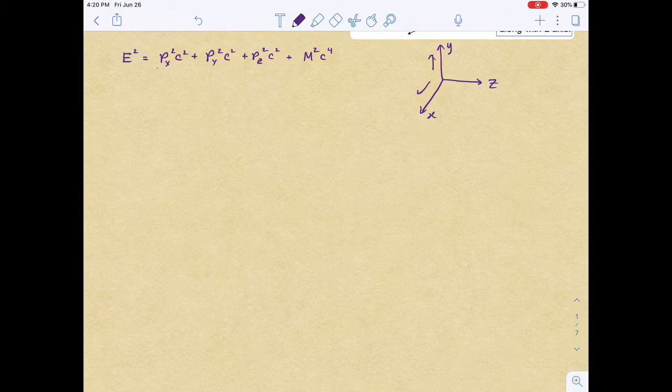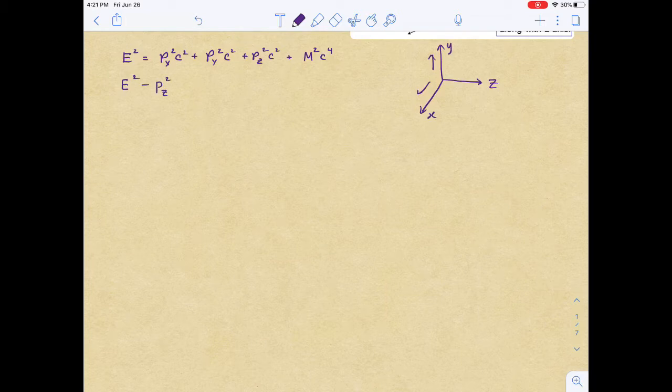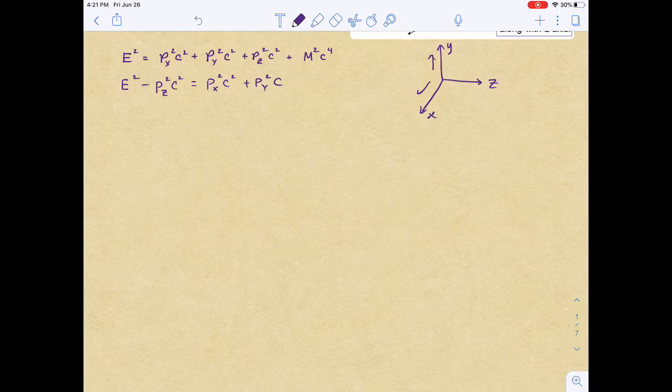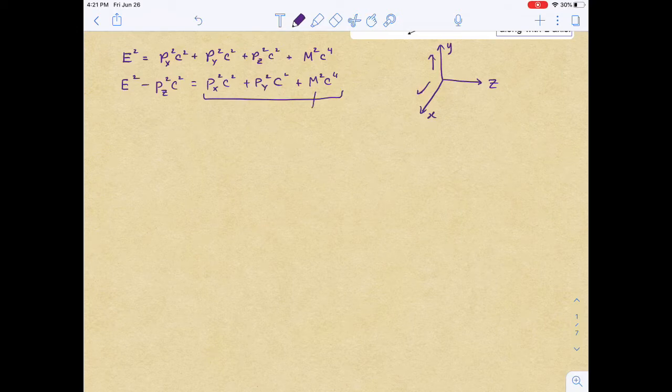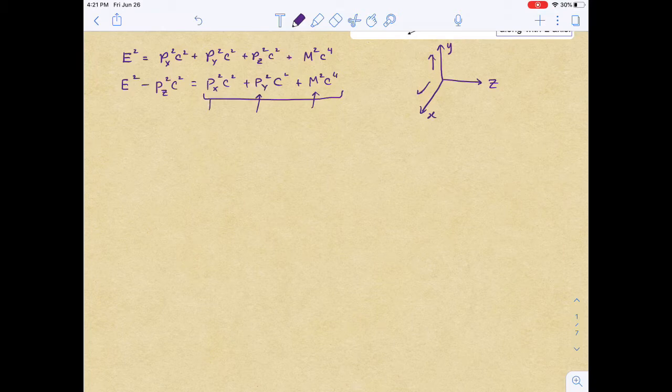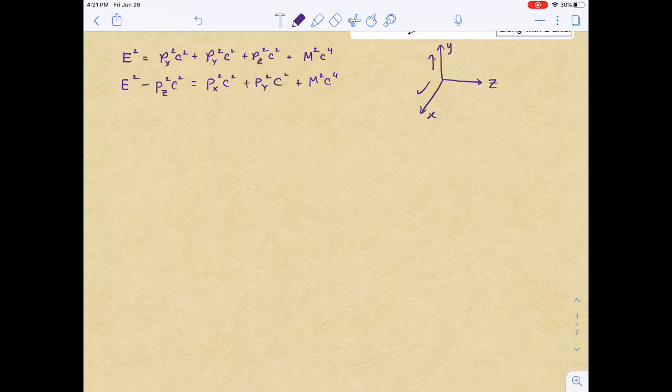We can look at this equation - px, py, and this m expression are invariant. So we can regroup them by bringing pz squared to the other side. E squared minus pz squared c squared equals px squared c squared plus py squared c squared plus m squared c to the fourth. All these quantities on the right side are invariant - the mass is invariant, the x and y components of momentum are invariant.